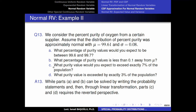Having solved parts A, B, and C, we move to part D: what purity value is exceeded by exactly 3% of the population? The population consists of normally distributed oxygen tube purity percentages with μ = 99.61 and σ = 0.08. We need a purity value exceeded by only 3% of the population, meaning only 3% of tubes have a higher purity than this value and the remaining 97% have a lower purity.